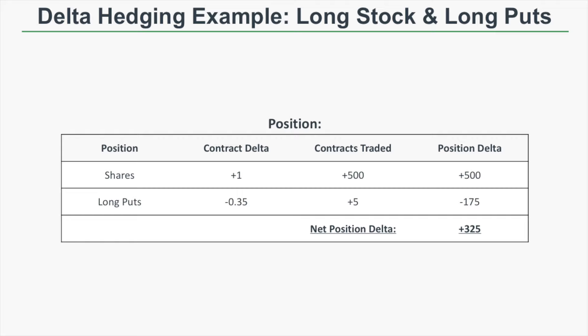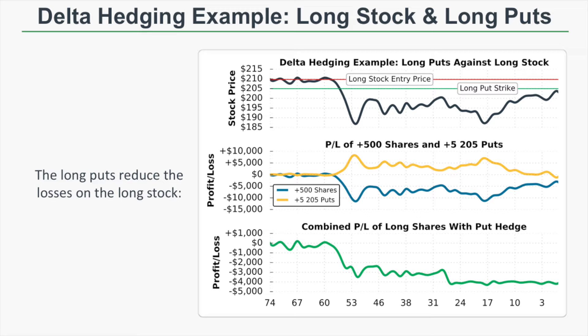Now let's look at a real Delta hedging example of long shares with a long put hedge. The initial position is long 500 shares, giving a position Delta of plus $500. To hedge that position, we buy five put contracts with a position Delta of negative $175. The net position Delta initially is plus $325. The following graph shows the stock price through time, the profit and loss of the long shares and the long puts separately, and the combined profit and loss of both positions.